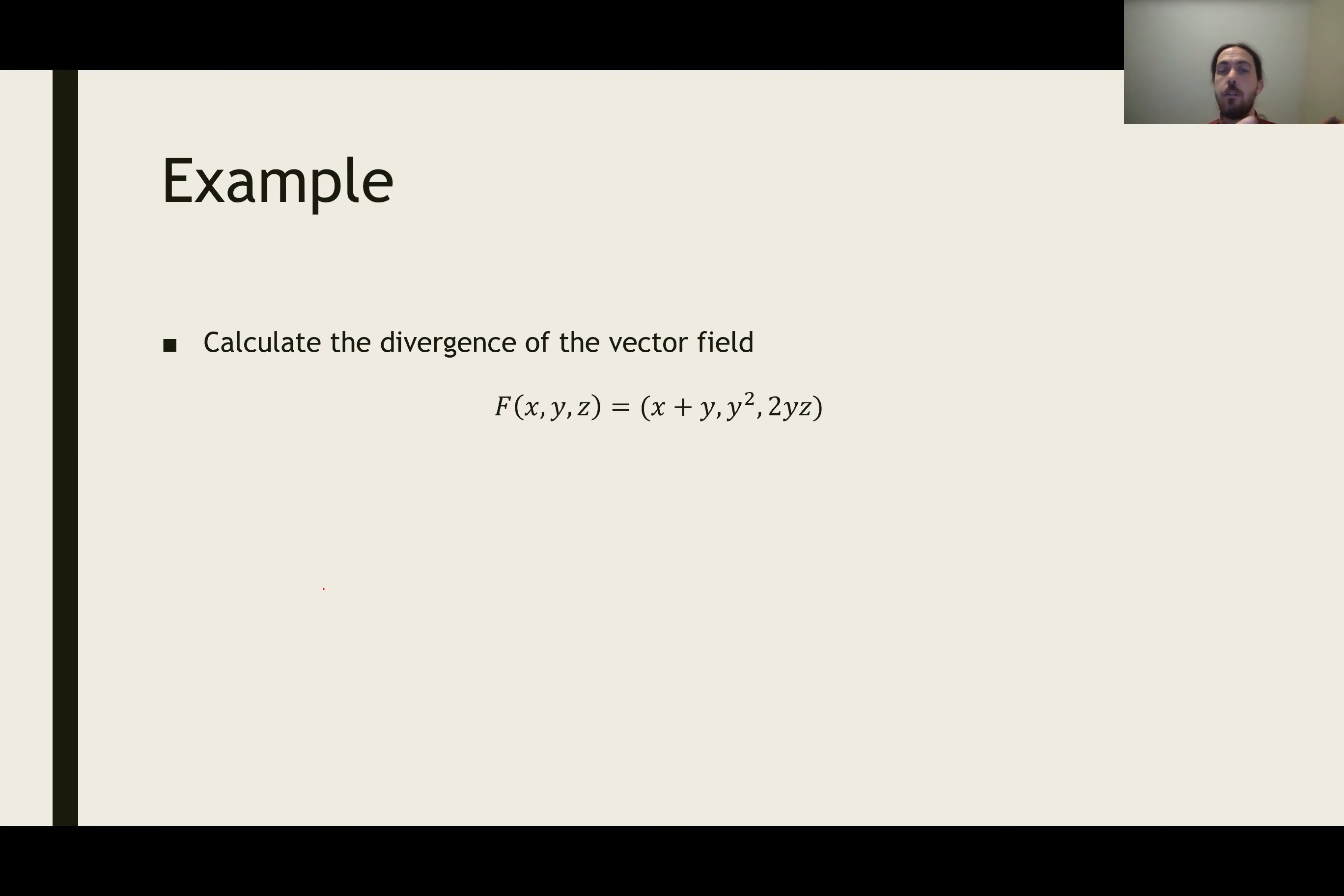For example, here's a vector field: F(x,y,z) = (x + y², y², 2yz). We want to calculate the divergence of that. We take the x derivative of the first component, which is 1. We take the y derivative of the second component, which is 2y, and we take the z derivative of the third component, which equals 2y again, because the z derivative of 2yz gives us 2y, and we add all those up. So the divergence of this vector field is 1 + 4y.